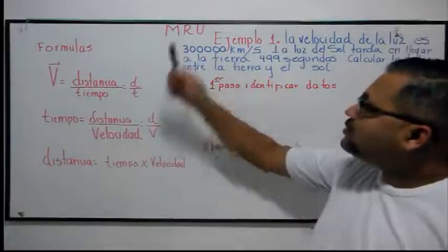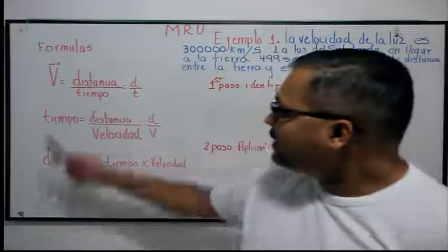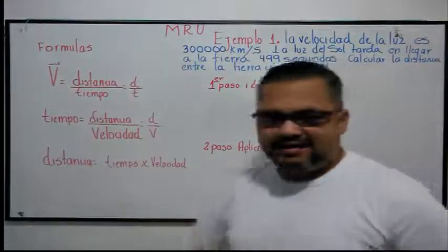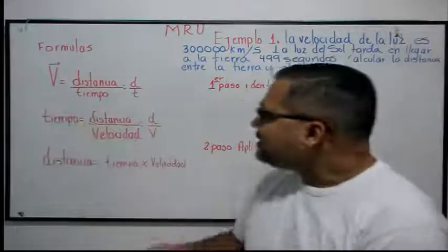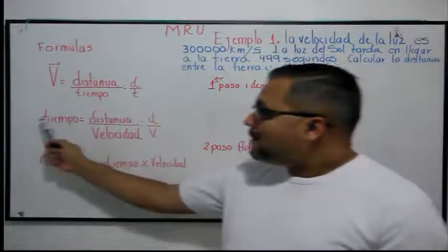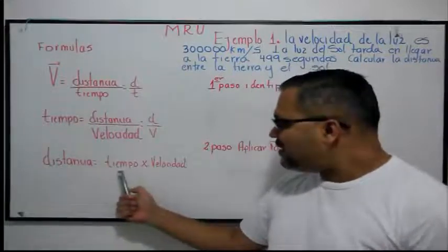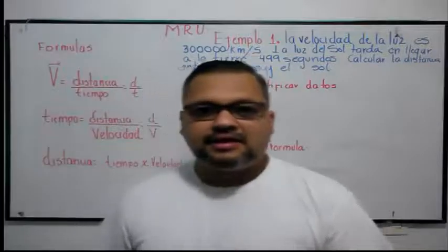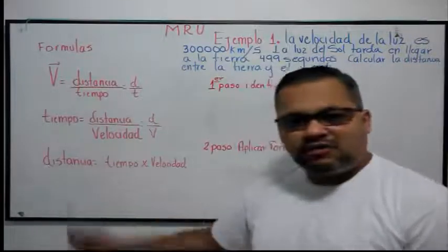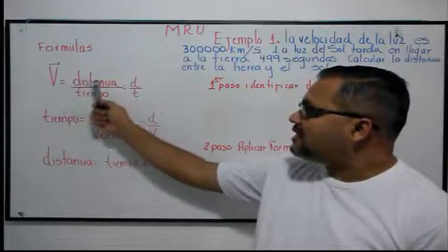Con respecto al movimiento rectilíneo uniforme, debemos recordar las siguientes fórmulas: la velocidad es la distancia dividida entre el tiempo; el tiempo es la distancia dividida entre la velocidad; y la distancia es el tiempo multiplicado por la velocidad. Para utilizarlas, debemos tener muy en cuenta la pregunta. Si dice calcular la distancia, usamos la fórmula de la distancia. Si dice calcular el tiempo, usamos distancia dividido velocidad. Si dice calcular la velocidad, usamos distancia dividido tiempo.